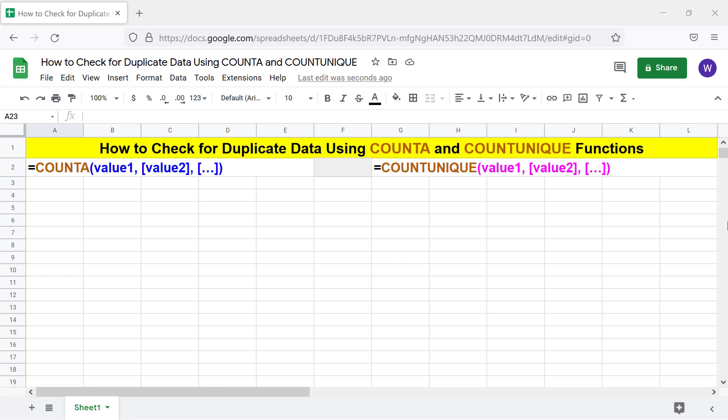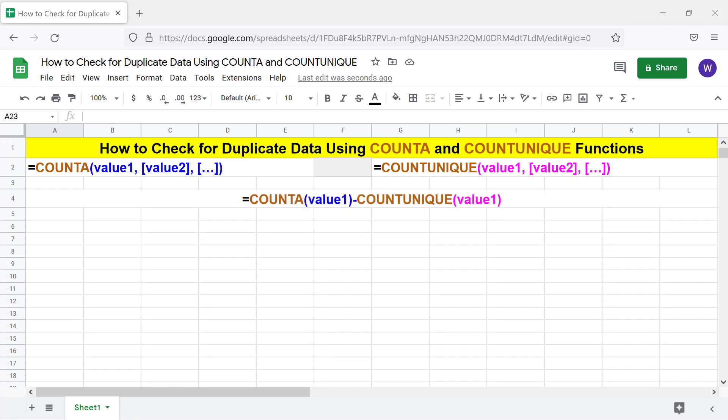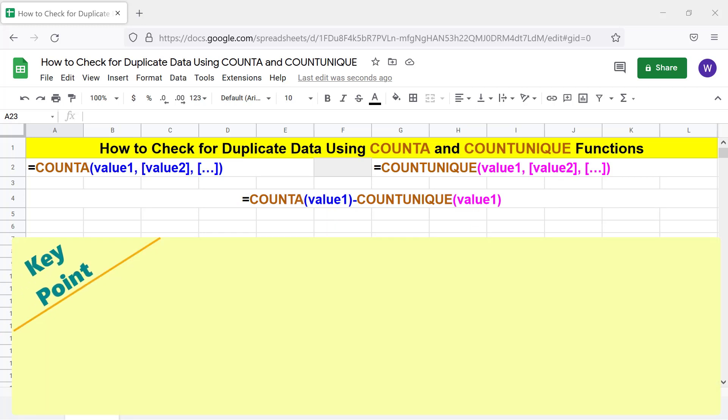This is the two functions combo formula. In this formula, each of these two functions have only one argument, value1, because we want to check for duplicate data in only one range. Key point: the number of duplicate entries is equal to the difference between the values returned by COUNTA and COUNTUNIQUE.